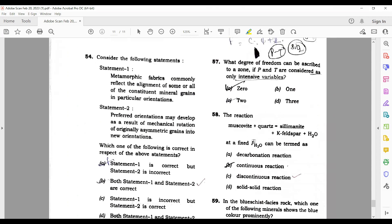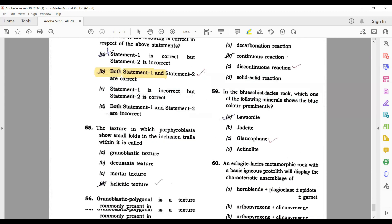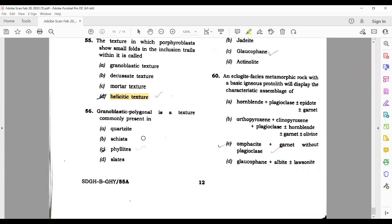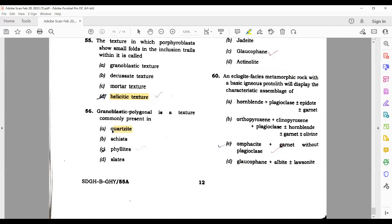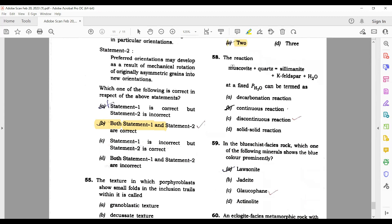Which one among the following represents the metamorphism of a local extent? Impact metamorphism. Perfectly developed foliation independent of bedding resulting from the parallel arrangement of very fine-grained phyllosilicate in metamorphic rocks is called - here they are using the word phyllosilicates, so go with slaty cleavage. Snowball garnet texture is always syntectonic. Next question - consider the following statement. Metamorphic fabrics commonly reflect the alignment of some or all constituent mineral grains - this is right. Preferred orientations may develop as a result of mechanical rotation of original asymmetry grains - this is again right. So both statements are right, so B is your correct option.